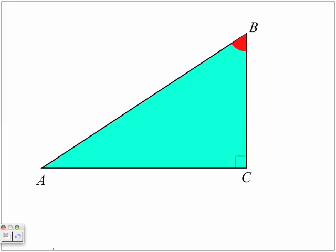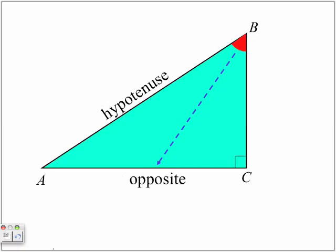Here we're looking at the same triangle, but now we are looking at angle B. The hypotenuse is no different — it's still opposite to whatever the 90-degree angle is. But the opposite side is based on whatever angle is the angle in question. So we have angle B, and opposite to angle B is that line, line AC. Which means if that's the hypotenuse and that's the opposite, this is the side considered adjacent to angle B.